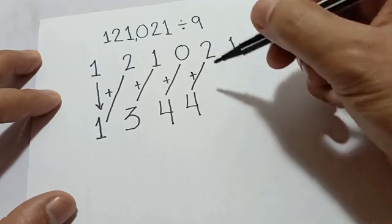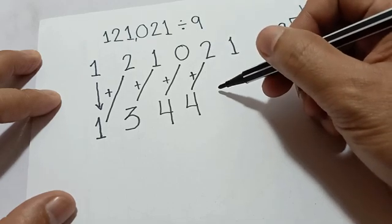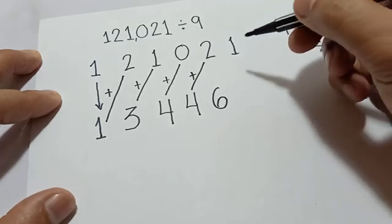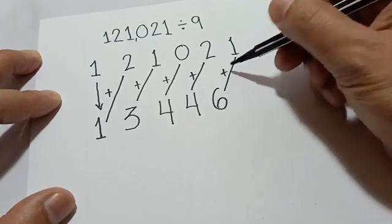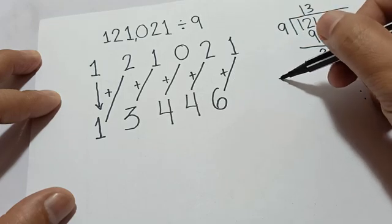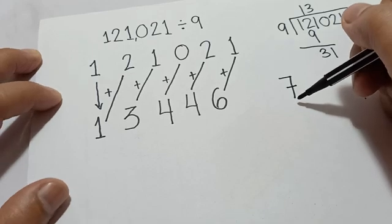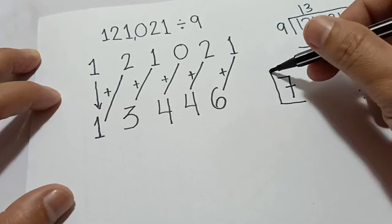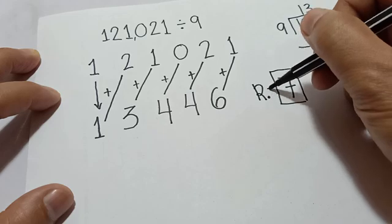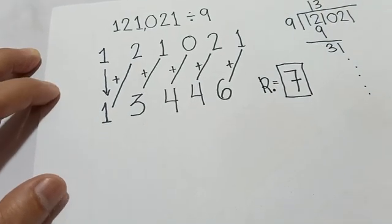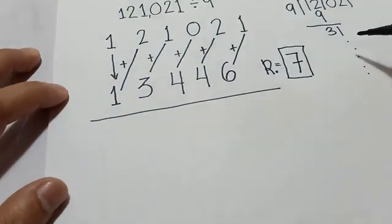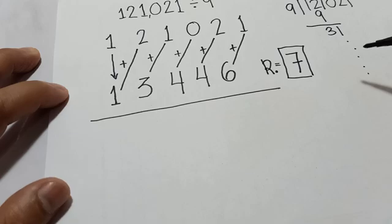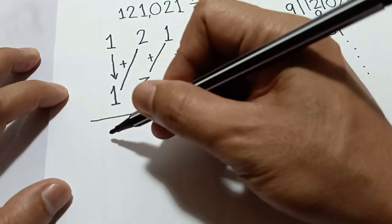Same process: three plus one is four, then four plus zero is four, then four plus two is six, then six plus one is seven. I'll write the answer here — seven — and this is the remainder. So the remainder is seven.